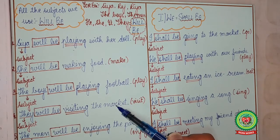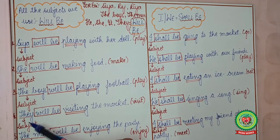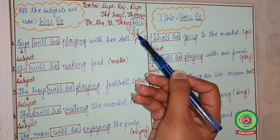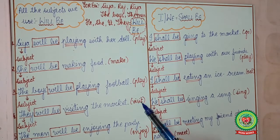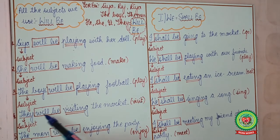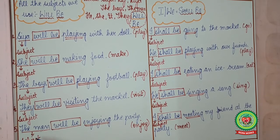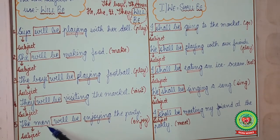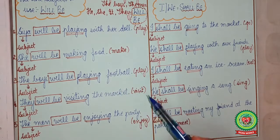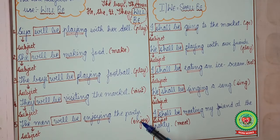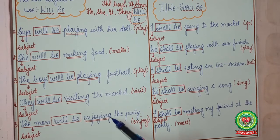They dash the market, and the verb is visit. Who? They — so subject. With they we will use will be. Visit will change to present form of verb plus ing, that is visiting. So the answer is: they will be visiting the market. The men dash the party, and the verb is enjoy. Who? The men — so subject. With the men we will use will be. Enjoy will change to enjoying. So the answer is: the men will be enjoying the party.